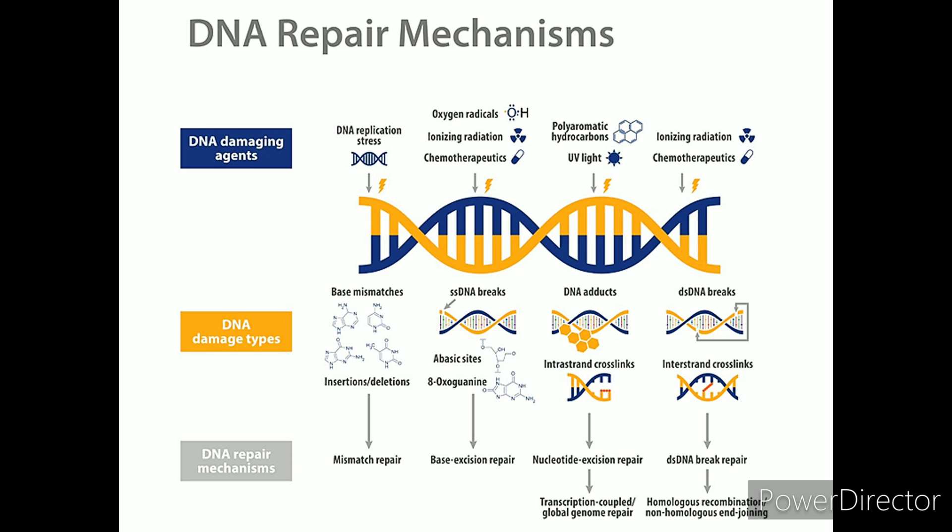DNA Repair. Damaged DNA can be repaired by several different mechanisms. Mismatch Repair. Sometimes DNA polymerase incorporates an incorrect nucleotide during DNA synthesis and the 3'-5' exonuclease editing system fails to correct it. These mismatches, as well as single base insertions and deletions, are repaired by the mismatch repair system.